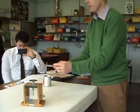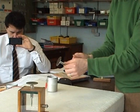This is called a proof plane. It's insulated here where I'm holding it. And this is just a metal disc. You know how the Goldleaf electroscope operates by itself.